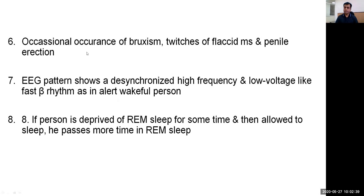There is also an occasional occurrence of bruxism, which is grinding of teeth and is a common finding in children. Switches of flaccid muscles and penile erection also occur. The EEG pattern shows a desynchronized high-frequency and low-voltage fast rhythm, as occurs in an alert and wakeful person.